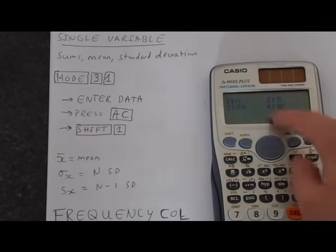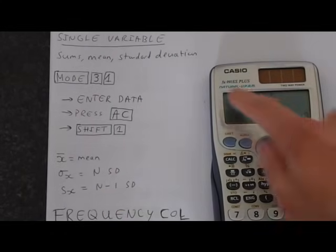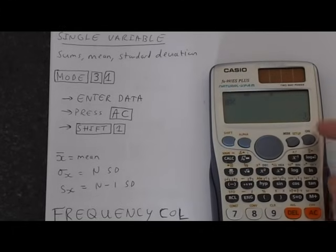If you want N minus 1 standard deviation, just press 4. That function will come up, press equals, and you get the standard deviation when you're dividing by N minus 1.